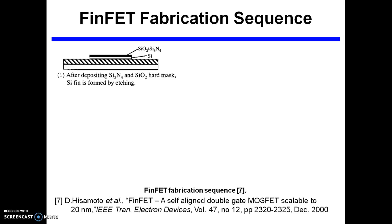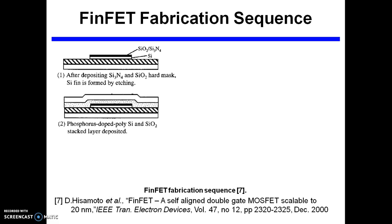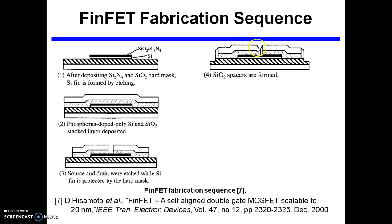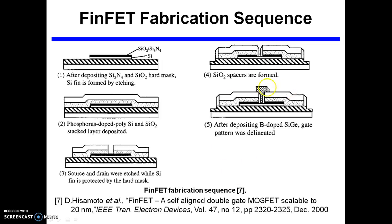There are two types of FinFET fabrication. First, we can build it on SOI — silicon on insulator — where silicon and oxide are present, silicon is grown on the insulator, then silicon dioxide is grown, and silicon oxynitride or silicon nitride is deposited on top. Then oxidation is carried out and phosphorus-doped Si is deposited. Afterwards, source and drain are etched while the Si fin is protected by the hard mask SiO2. Then SiO2 spacers are formed, and finally a boron-doped SiGe gate is fabricated.